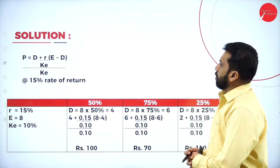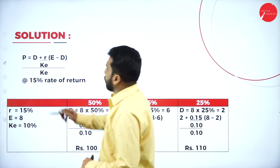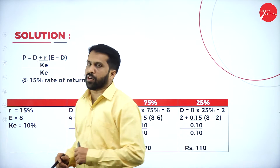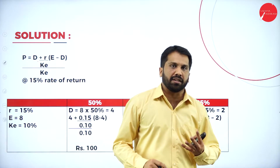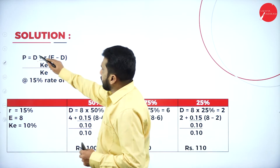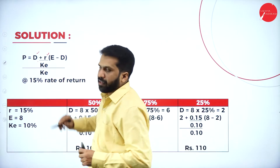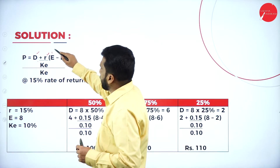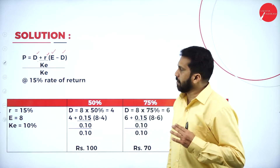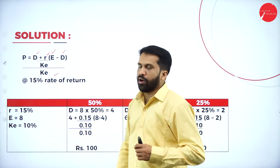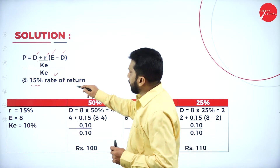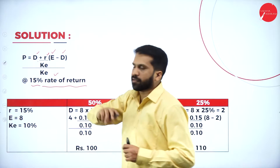The formula, as I told you: P = D + R(E − D)/Ke, whole divided by Ke. P stands for price of the share. Dividend plus rate of return times earnings minus dividend, divided by cost of equity — all divided by cost of equity. Now, 15% rate of return.